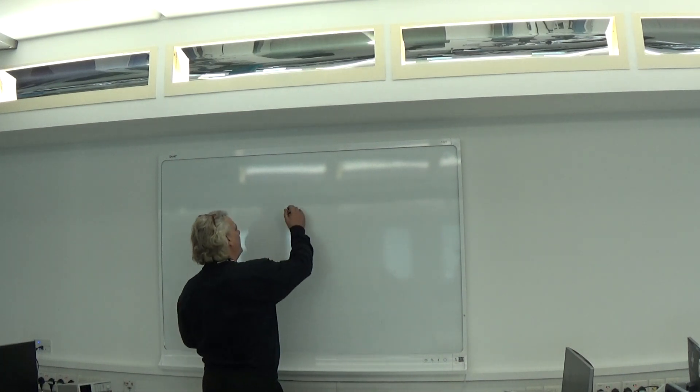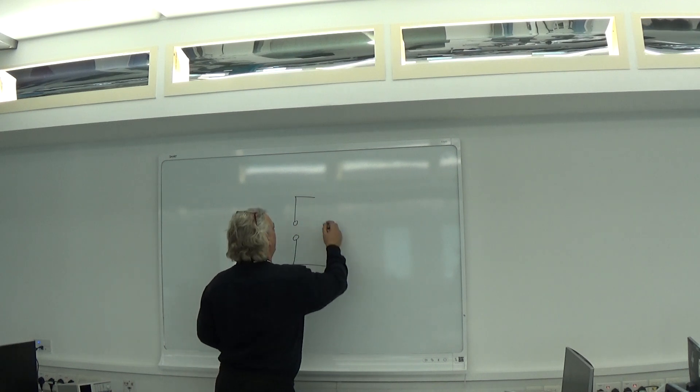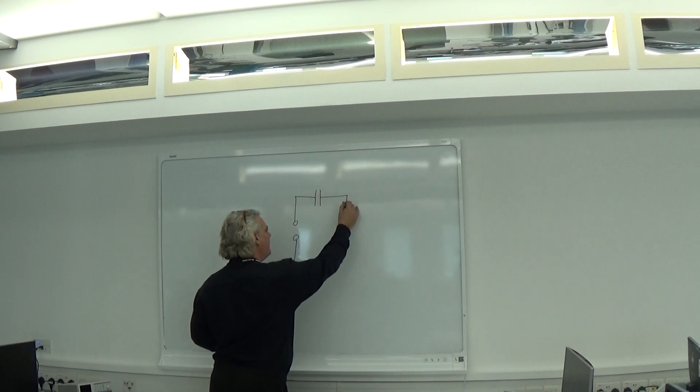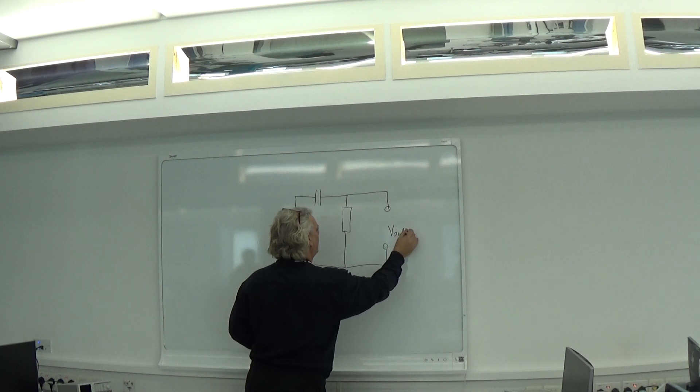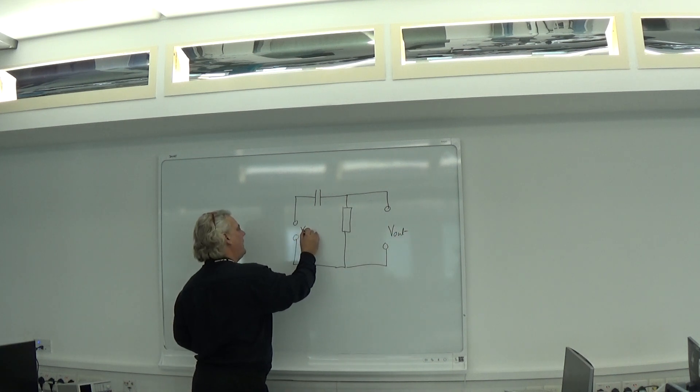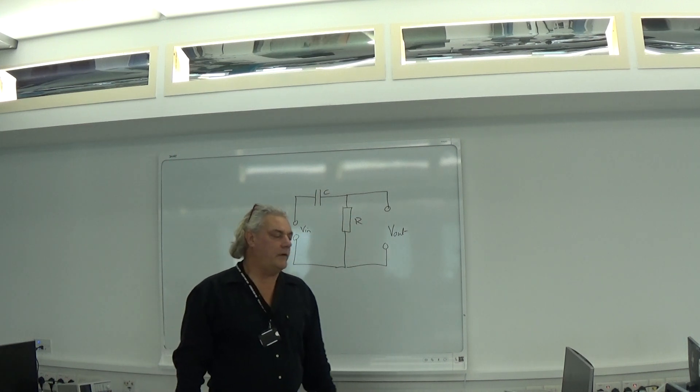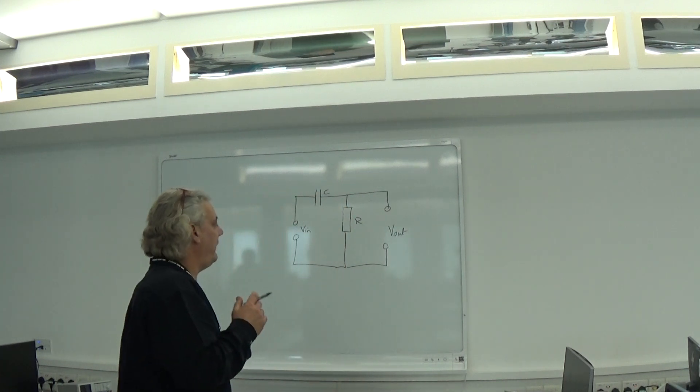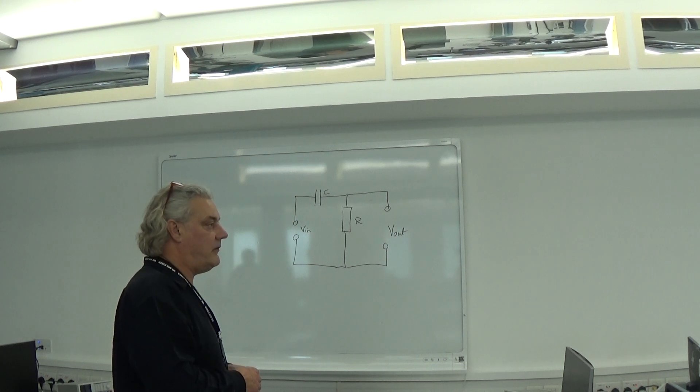Now effectively what we do is we turn the circuit on its head, or back to front. So now what we have, if we have a capacitor here and a resistor here, and this point here, this is V out, and this is V in. This is obviously C, this is obviously R. What I want is I want a circuit which lets through the high frequency but blocks the low frequency, the opposite to what we had before.